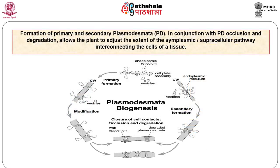In this slide we are going to see the formation of primary and secondary plasmodesmata. In conjunction with plasmodesmata occlusions and degradation, this allows the plant to adjust the extent of symplasmic or supracellular pathways interconnecting cells of a tissue. In the biogenesis of plasmodesmata, two types are defined by their origin: primary and secondary plasmodesmata. Primary plasmodesmata are formed at cytokinesis at the end of cell division in the developing phragmoplast. During development, these simple structures are replaced by complex arrangements.